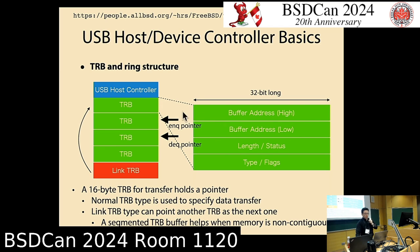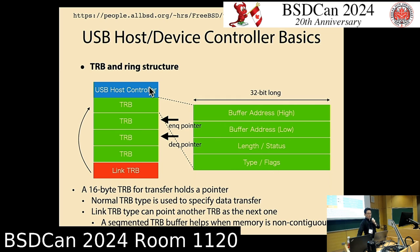This is a ring buffer with two pointers: an enqueue pointer and a dequeue pointer, maintained in each ring buffer. The last entry of the ring buffer is called a Link TRB — a 16-byte structure like other TRBs but with a pointer to another TRB and a different type value. If the host controller finds a Link TRB, it reads the next TRB from the address pointed to by the Link TRB.